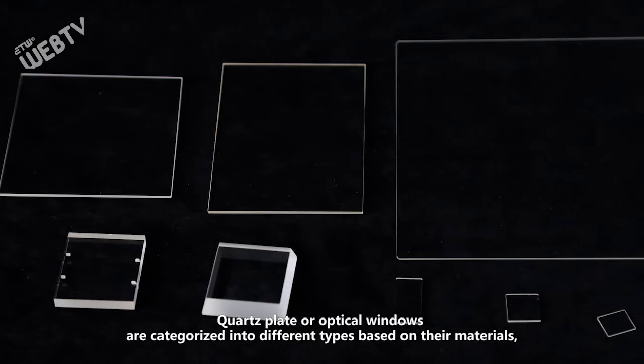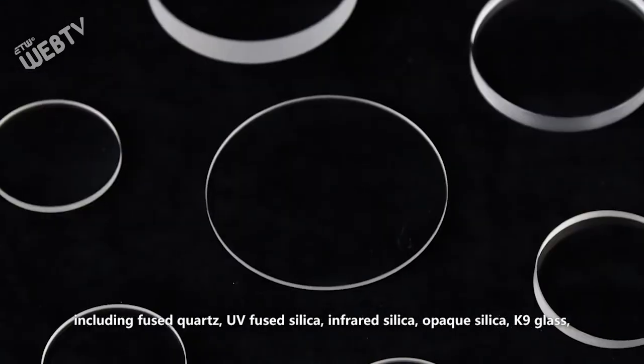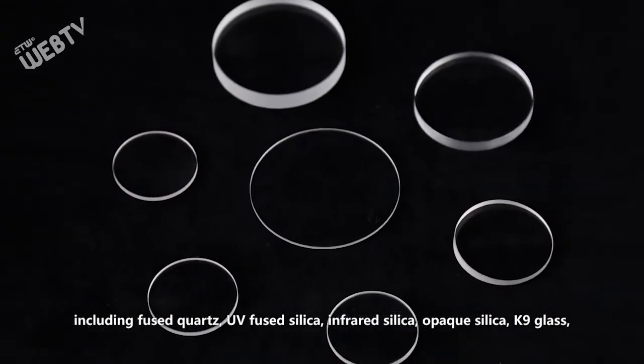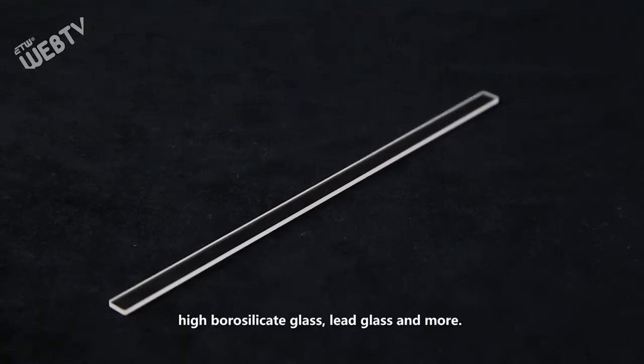Quartz plate or optical windows are categorized into different types based on the materials, including fused quartz, UV-fused silica, infrared silica, opaque silica, canine glass, high borosilicate glass, light glass, and more.